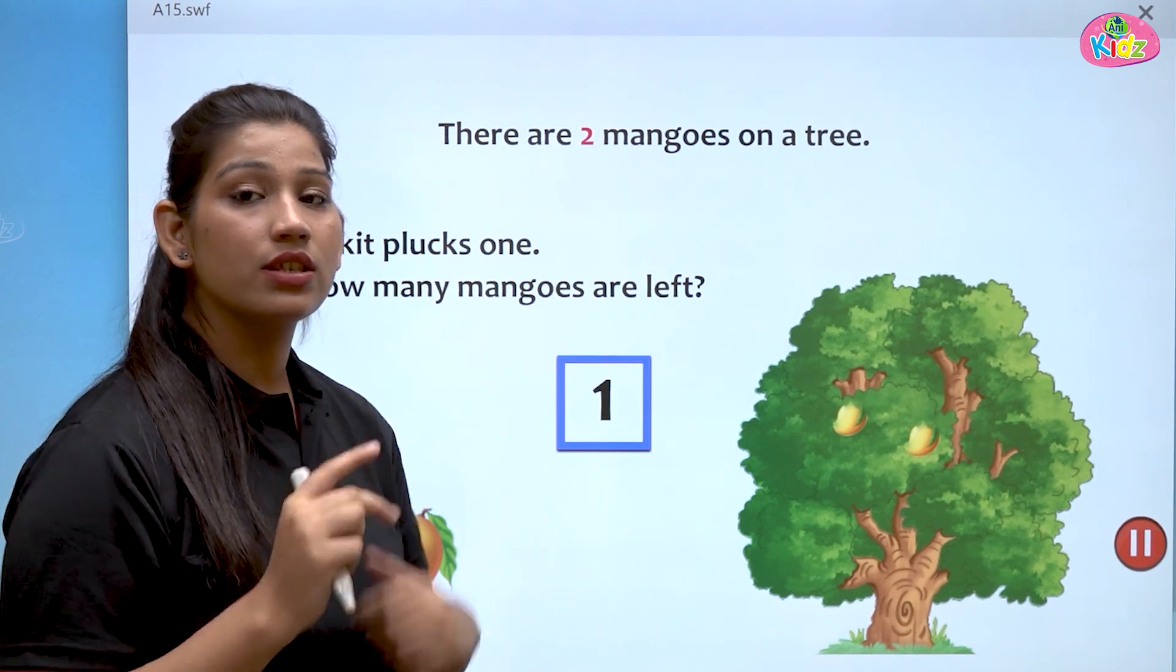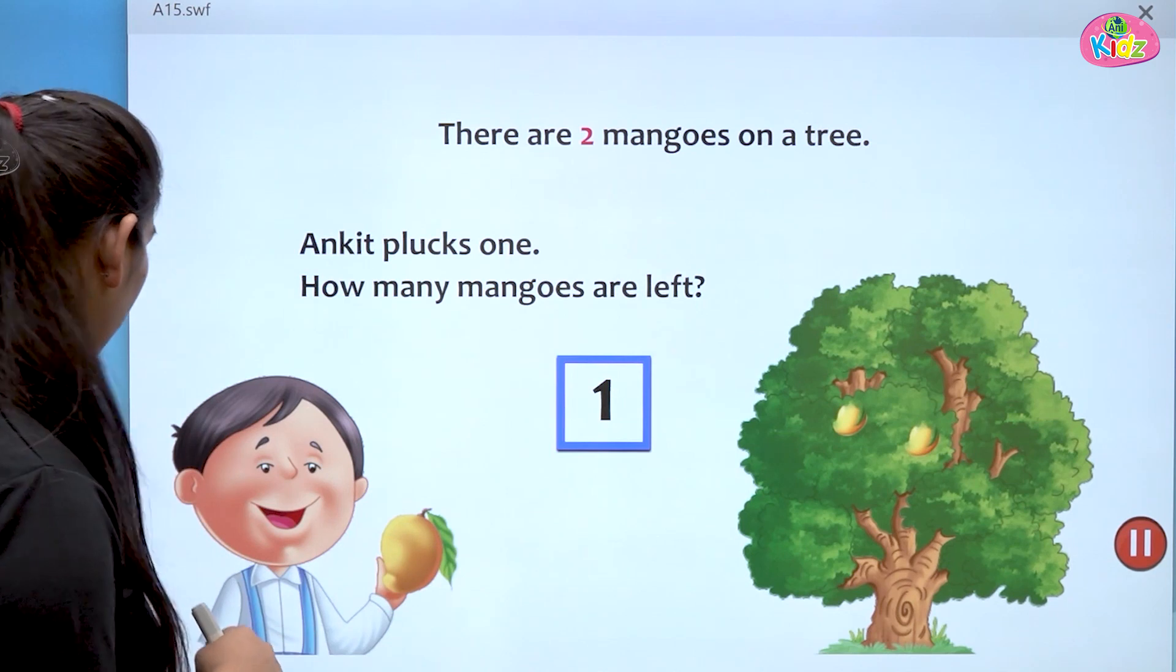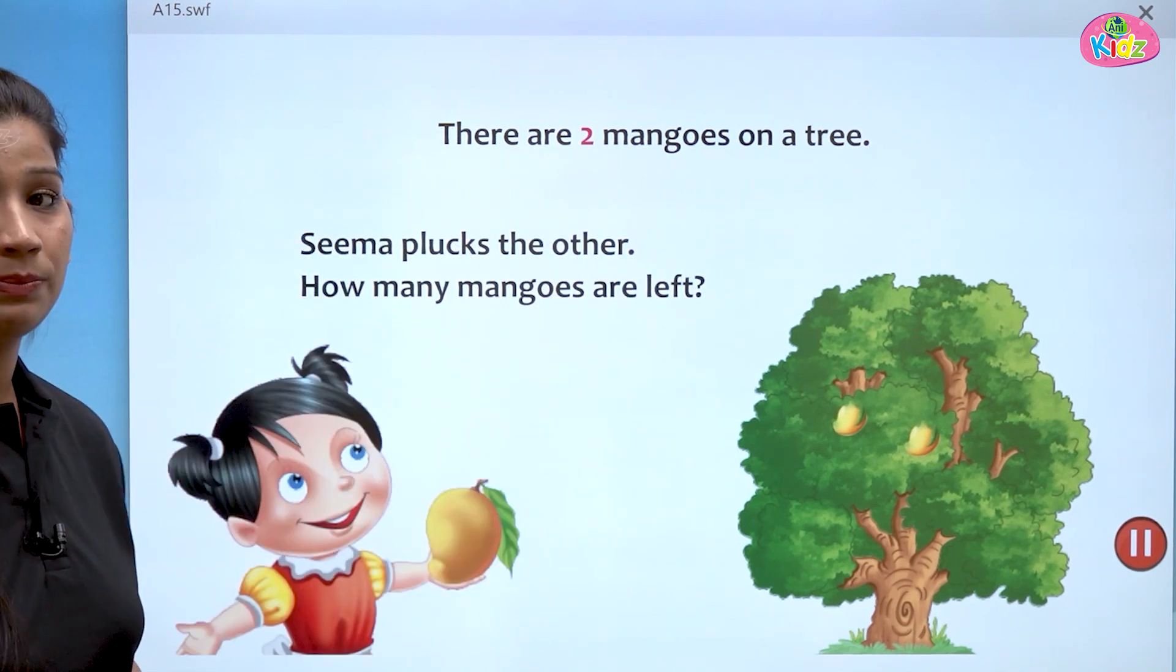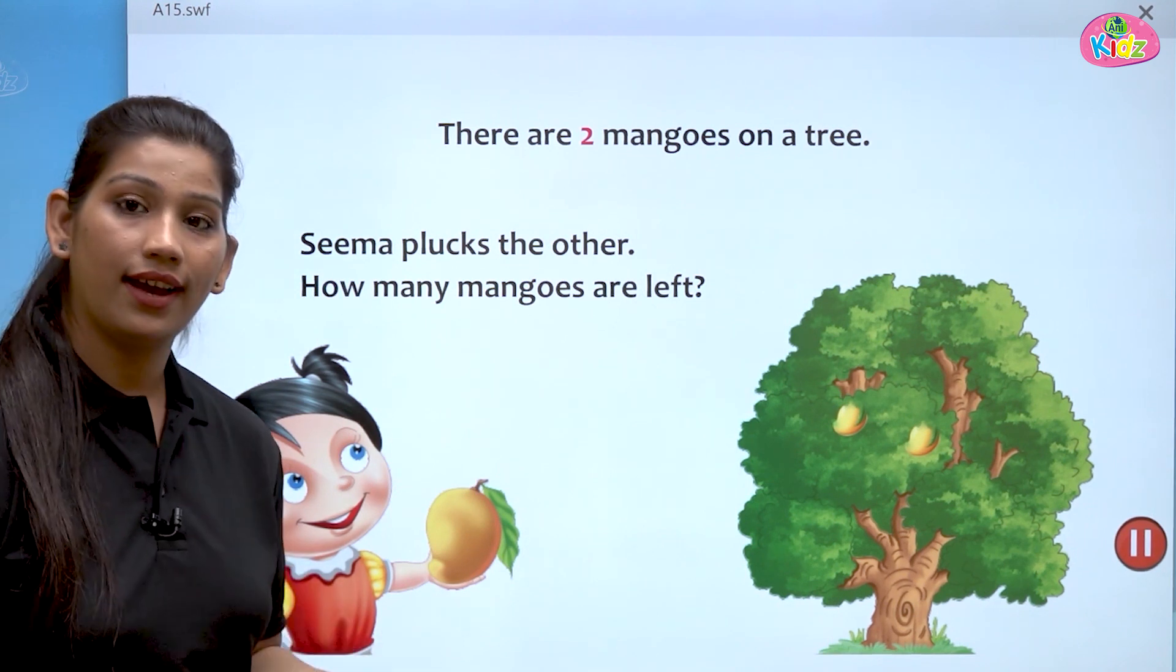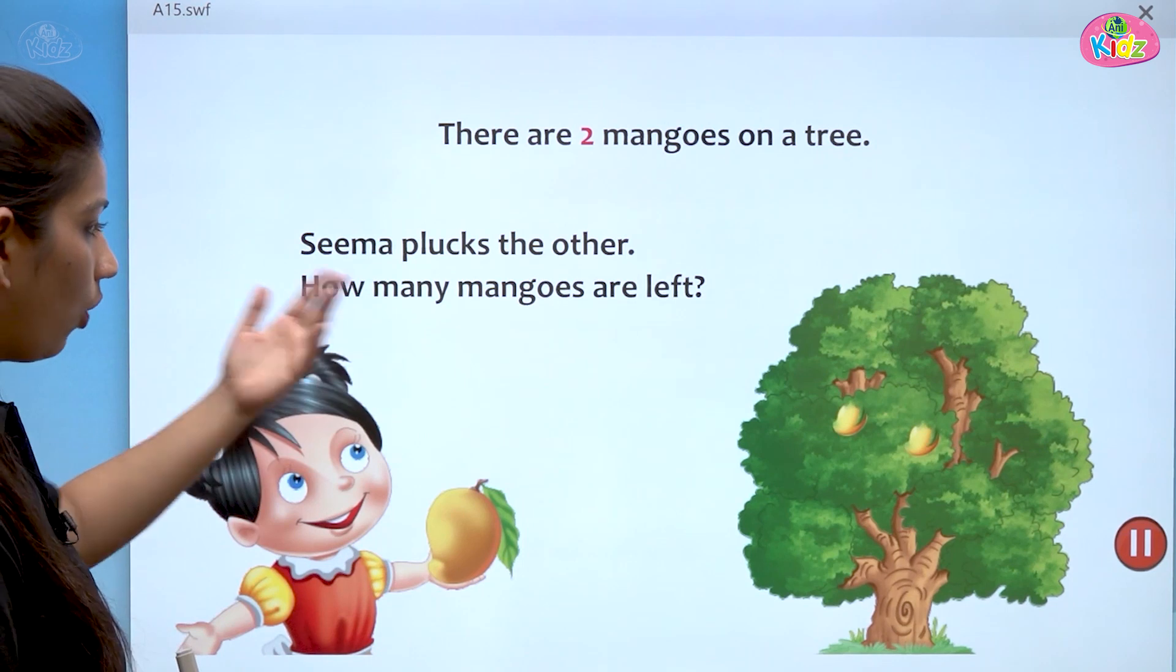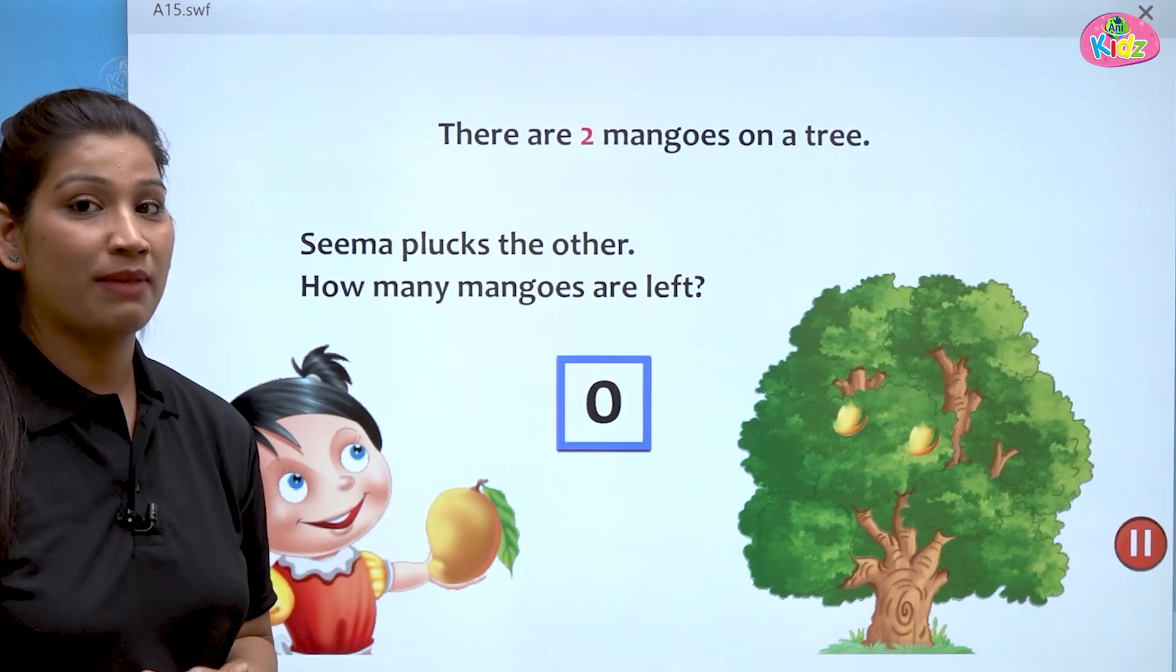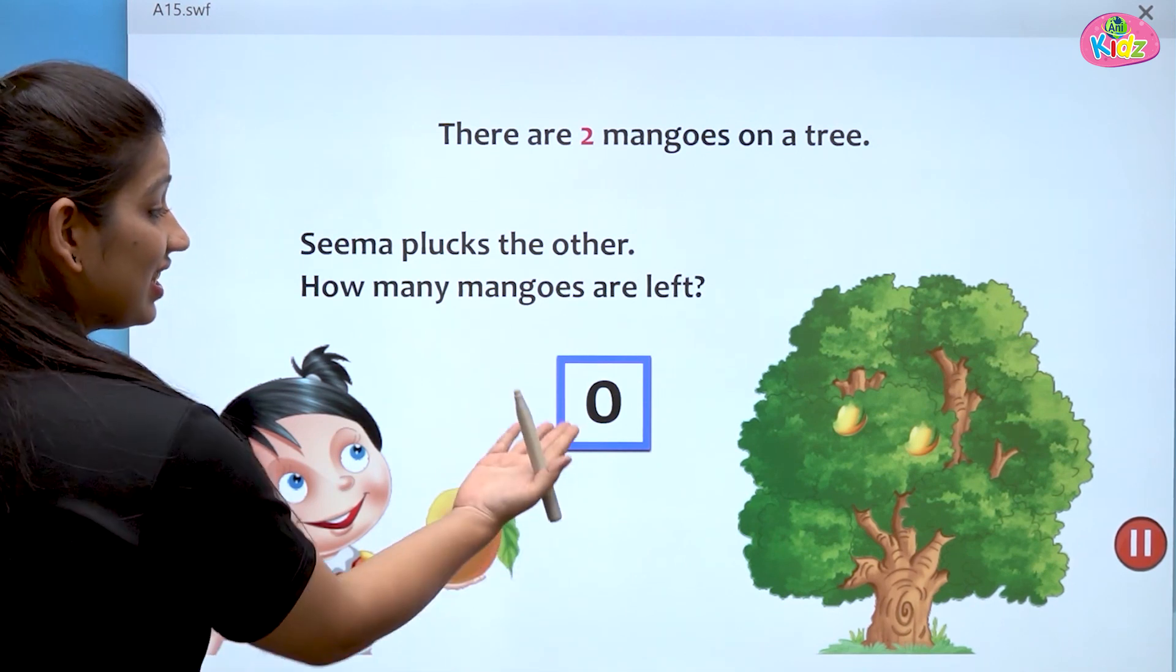There were two mangoes. Ankit ne one mango le liya. One mango left. Now, comes up Seema. And Seema plucks the other. Seema ne bhi dousra mango le liya. Now, how many mangoes are left? Seema ne jab dousra mango le liya, tab kitne mangoes rehi? Yes, it is zero.